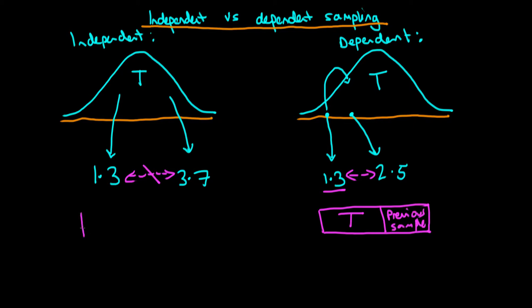If we contrast that with the independent case, there is absolutely no link between the samples here. The only thing that an additional sample conveys is information about T.